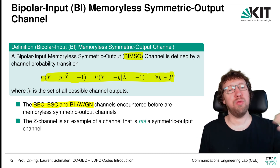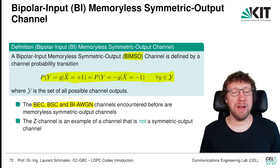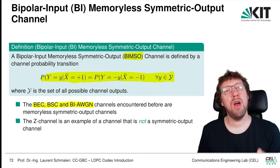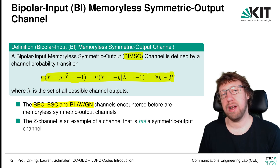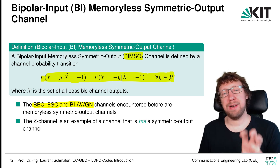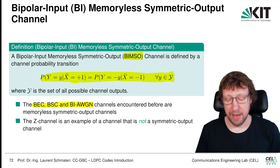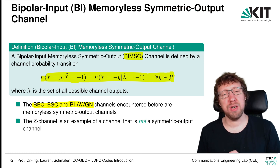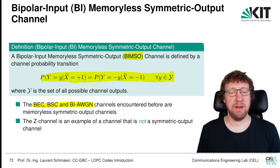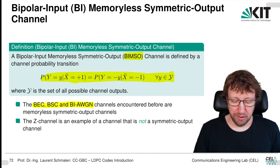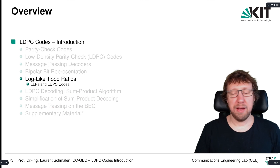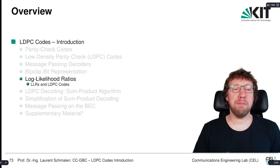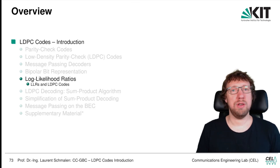Note that the binary erasure channel was not a weakly symmetric or symmetric channel as we defined it — this BIMSO symmetry is something different. The earlier symmetric channels looked at both input and output; here we are looking at just symmetric output channels. That's why we make the distinction: this is a BIMSO channel, while the others were symmetric channels. The BIMSO channel is what we will use later for the analysis. This concludes the bipolar bit representation; next we are going to introduce log-likelihood ratios.